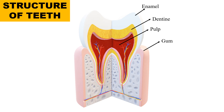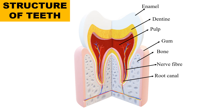Next is bone. These are the jaw bones in which the teeth are fixed. And then there are nerve fibers, which supply blood to the teeth and are also responsible for sensitivity. These nerve fibers travel through the root canal and ultimately reach the brain. This completes the internal structure of teeth.